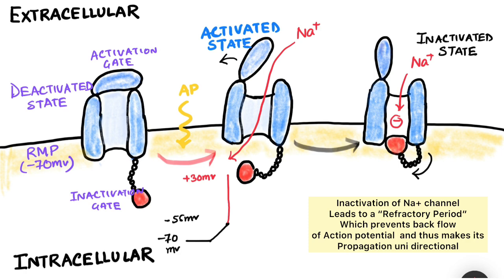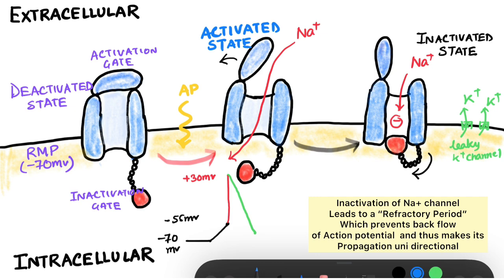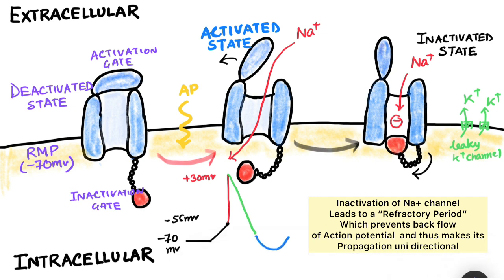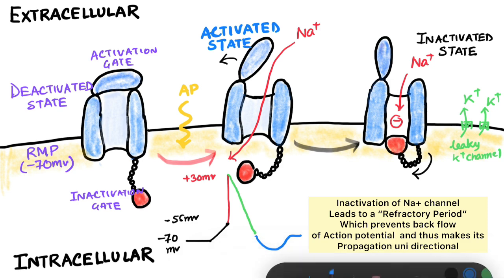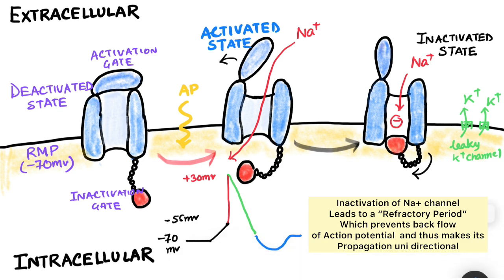As sodium cannot move in, but in any cell there is a continuous efflux of potassium from the cell through leaky potassium channels, the net cations within the cell fall and the cell potential again starts to fall down. When the cell potential falls further and goes into a state known as hyperpolarization, the inactivated sodium channels go back into the original state, which is known as the deactivated state. And this is how the cycle goes on repeating itself.